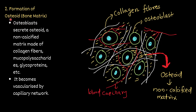Step two — formation of osteoid bone matrix. Osteoblasts secrete osteoid, a non-calcified matrix made up of collagen fibers, mucopolysaccharides, and glycoproteins. In this matrix you will not find calcium salts — only organic substances. The area also becomes vascularized by a capillary network. This area is called the osteoid — a non-calcified matrix without calcium salts.